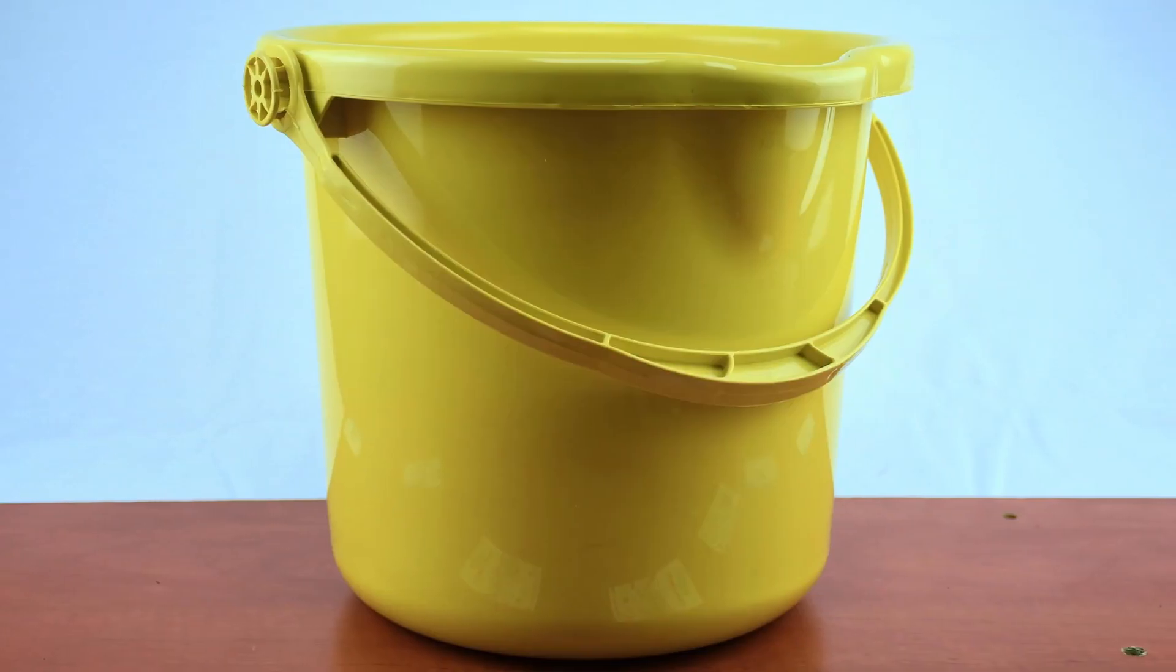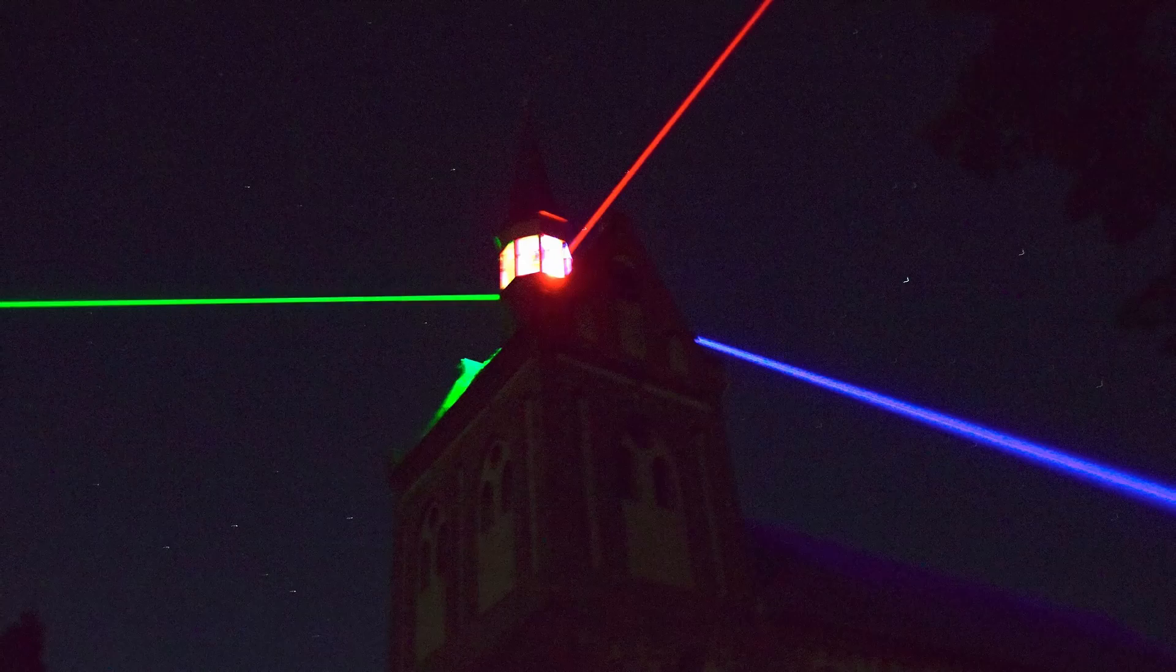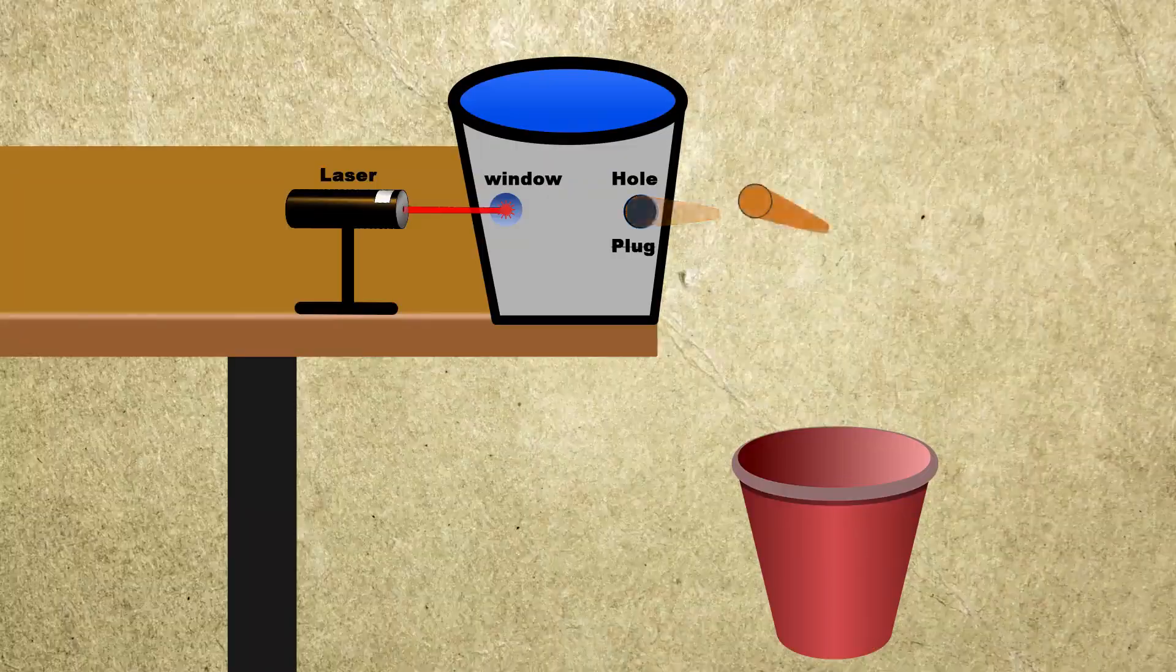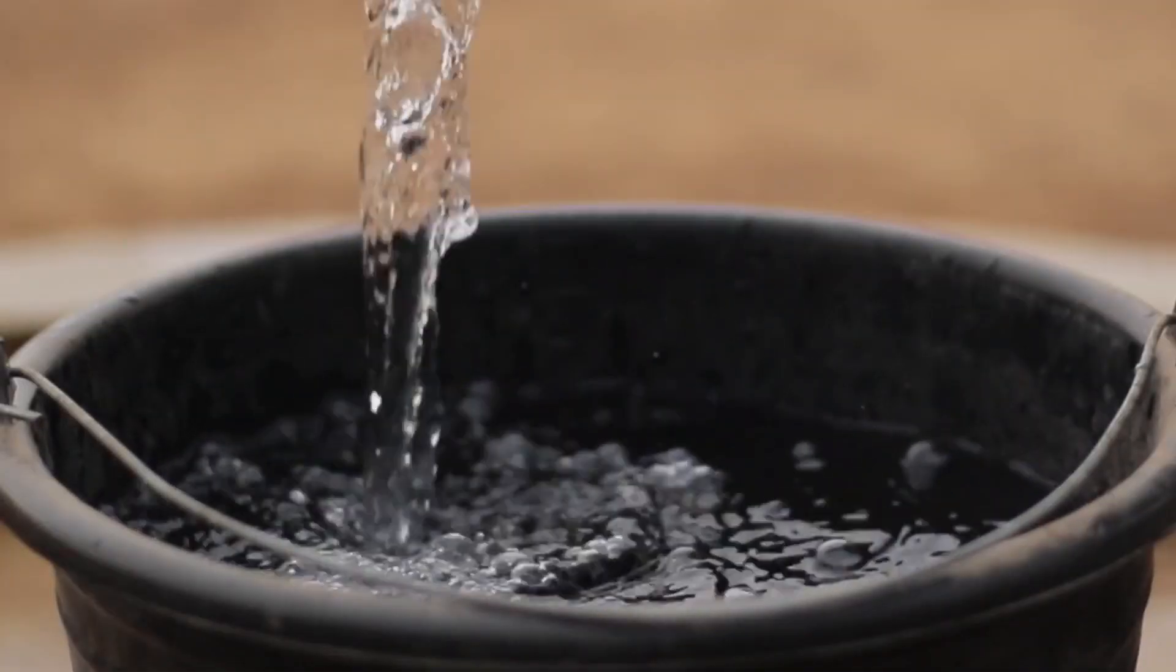On one end of the bucket there should be a small window for light to pass through and on the other end there is a literal hole for water to flow out from. After that we need to shine a laser through the window and let the water get out of the hole into another bucket on the ground.